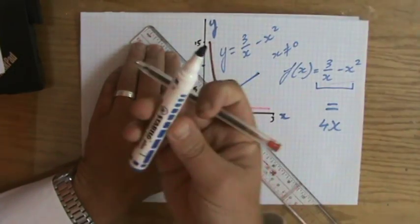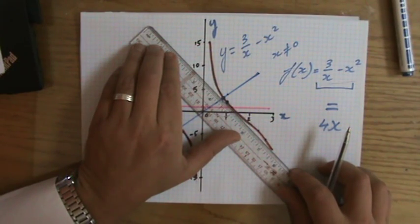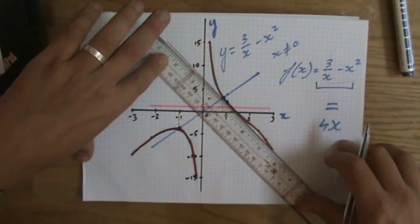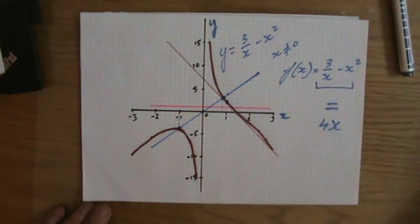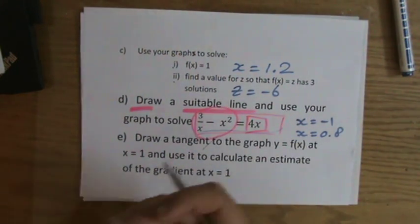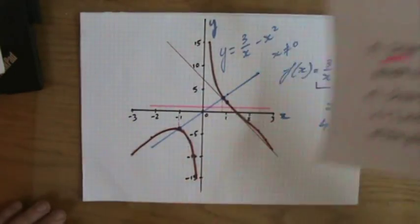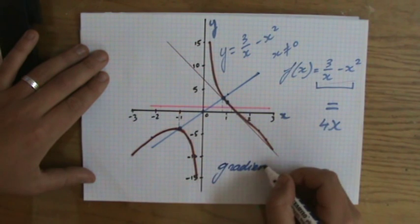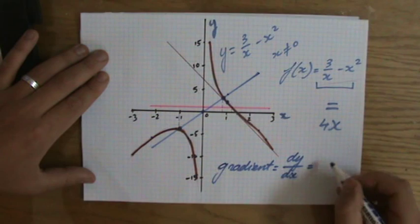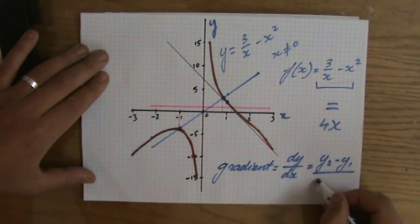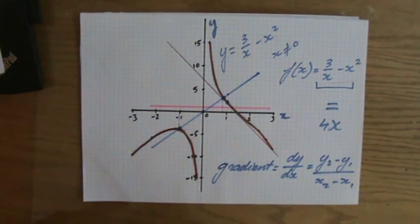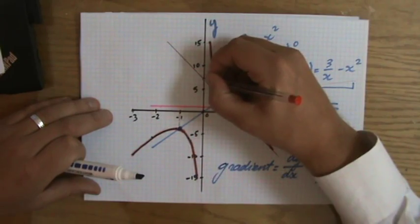I'm going to draw the tangent at x = 1 — just touching my graph there. It takes about 30 to 40 seconds but earns a point. Now I need to calculate an estimate of the gradient. The gradient is the difference in y over the difference in x, or (y2 - y1) / (x2 - x1). I need to find two suitable coordinates on the tangent line.